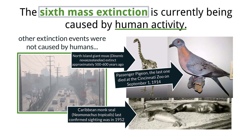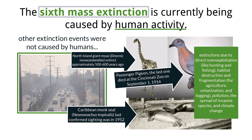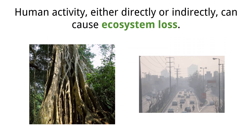These case studies collectively highlight that the primary drivers of today's extinctions include direct overexploitation like hunting and fishing, habitat destruction and fragmentation for agriculture, urbanization and logging, pollution, the spread of invasive species, and climate change — all stemming from human activities. Many ecosystems are being lost due to human activities, either directly or indirectly.